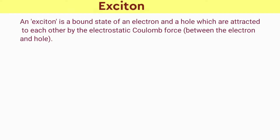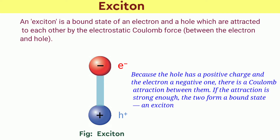An exciton is the bound state of an electron and a hole which are attracted to each other by the electrostatic Coulomb attraction between them. Let us consider an electron-hole pair shown in this diagram. Because the hole has a positive charge and the electron a negative one, there is a Coulomb attraction between them. If the attraction is strong enough, the two form a bound state known as an exciton.